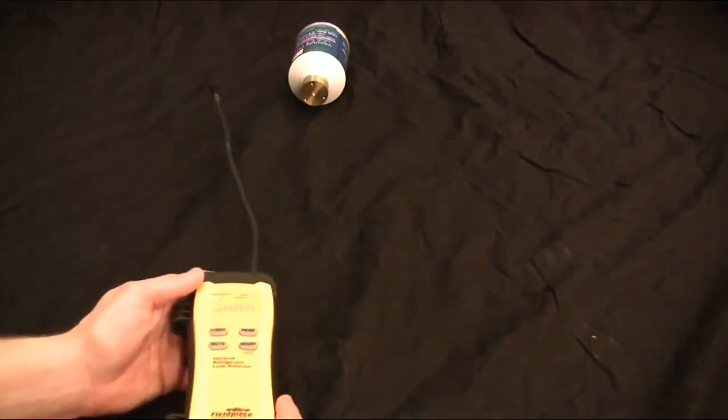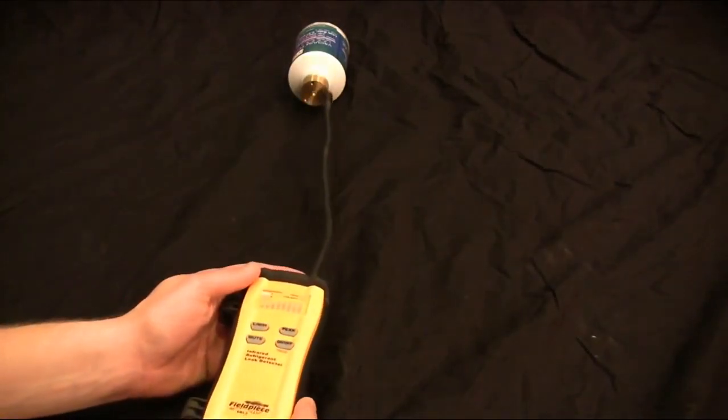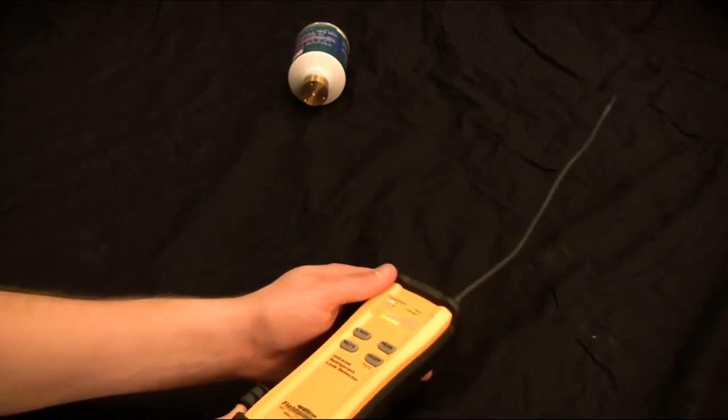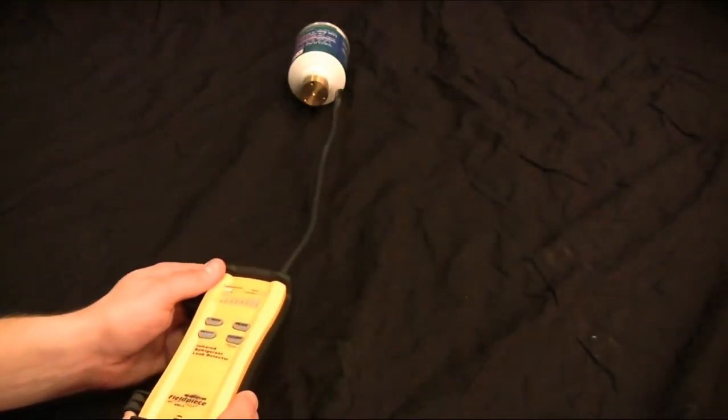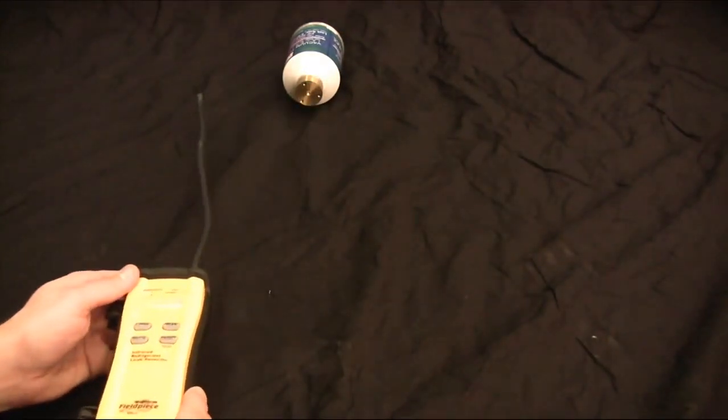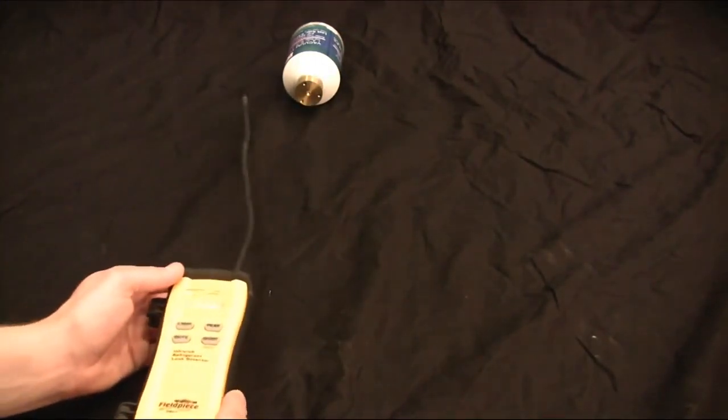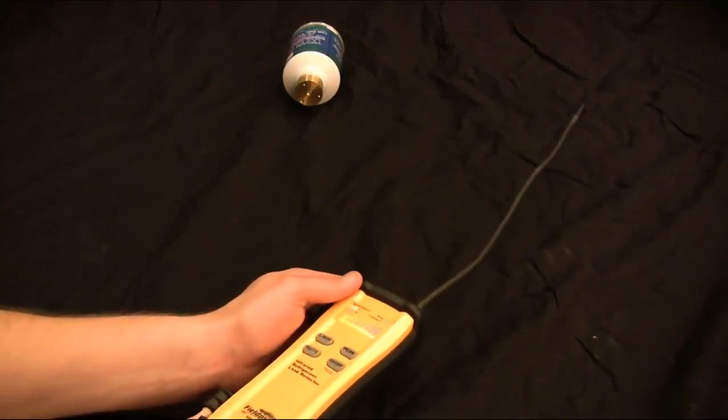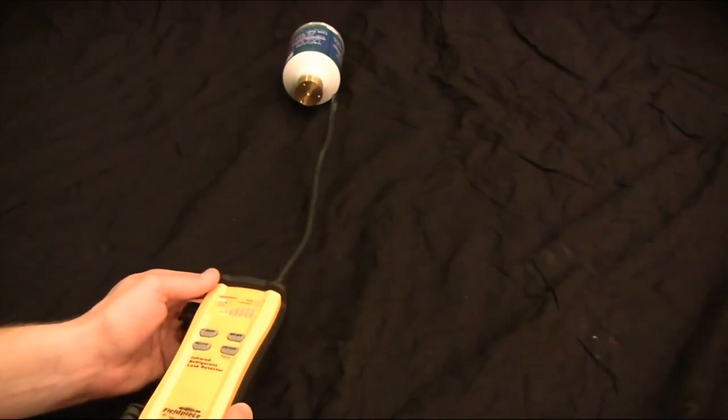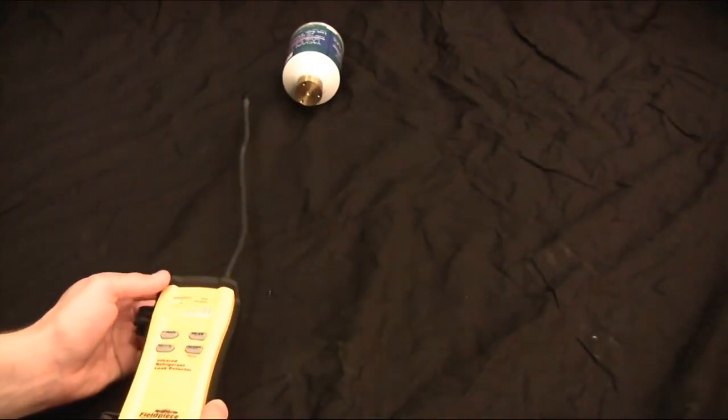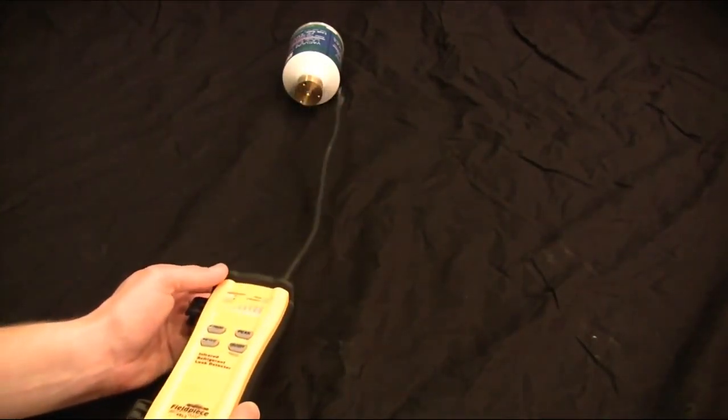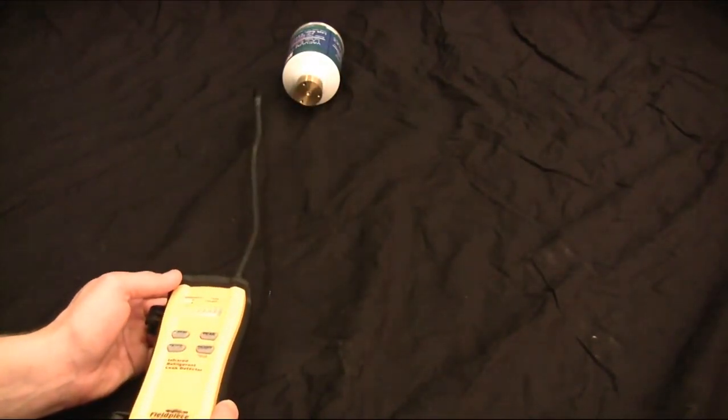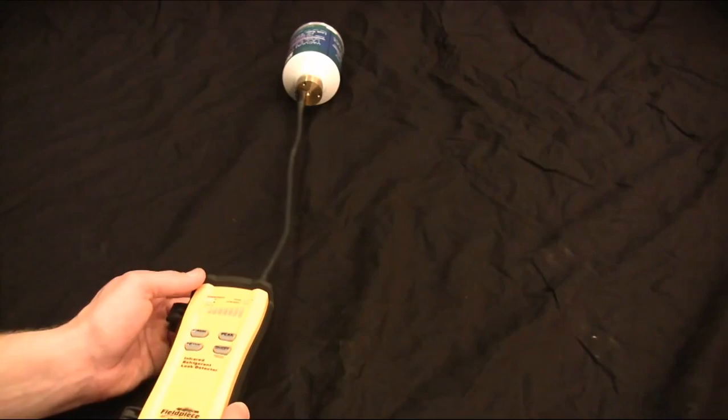Let's show you how it works in action. What you want to do is just slowly move it across the leak and sweep it by. And you'll see that it goes off. Now as it goes off, you want to pass it and keep moving and then sweep back. And it will go off again as you keep on passing the leak. And so this is what we call the sweeping method. You just want to dial it in until that buzzer stops going off.